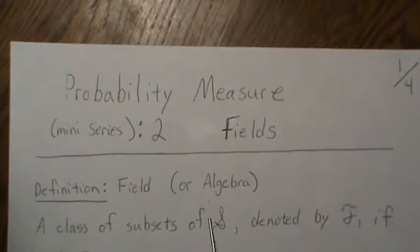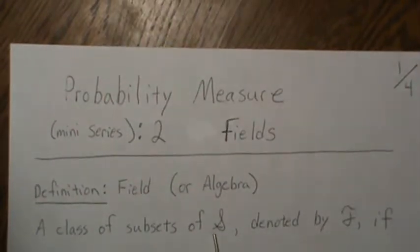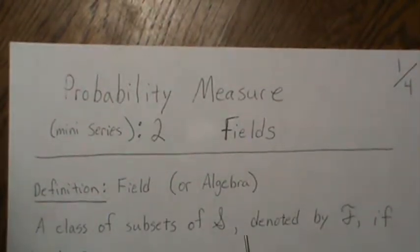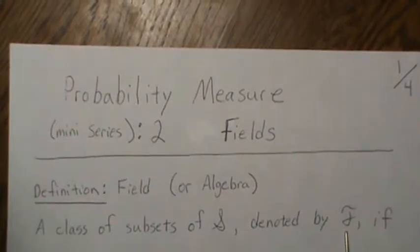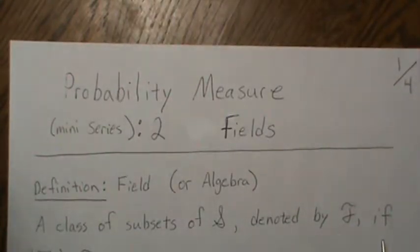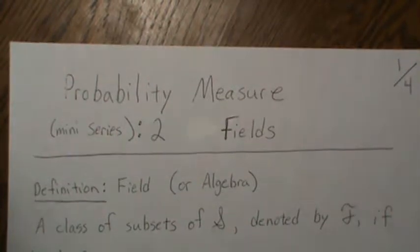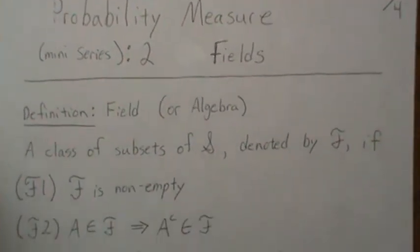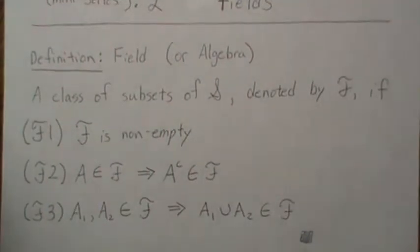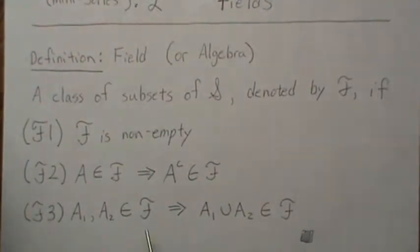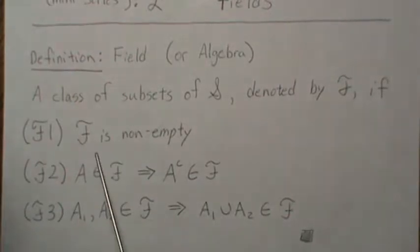We have a sample space, and we're going to take a subset of the sample space, denoted by F. If F meets these next three properties, it's called a field. It's a very simple three properties, but you take that and it becomes complicated quickly. The underlying structure, however, is very simple.